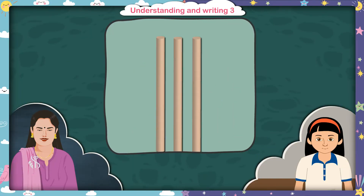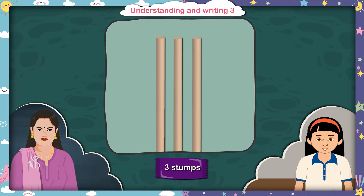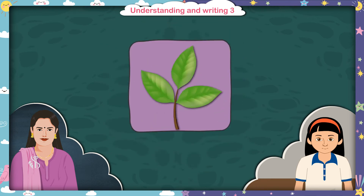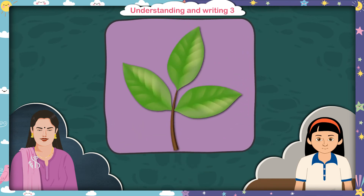Children, please tell me what do you see in this picture? Madam, we can see 3 stumps in this picture. Good. And how many leaves are there in this picture? Madam, there are 3 leaves in this picture. Very well.